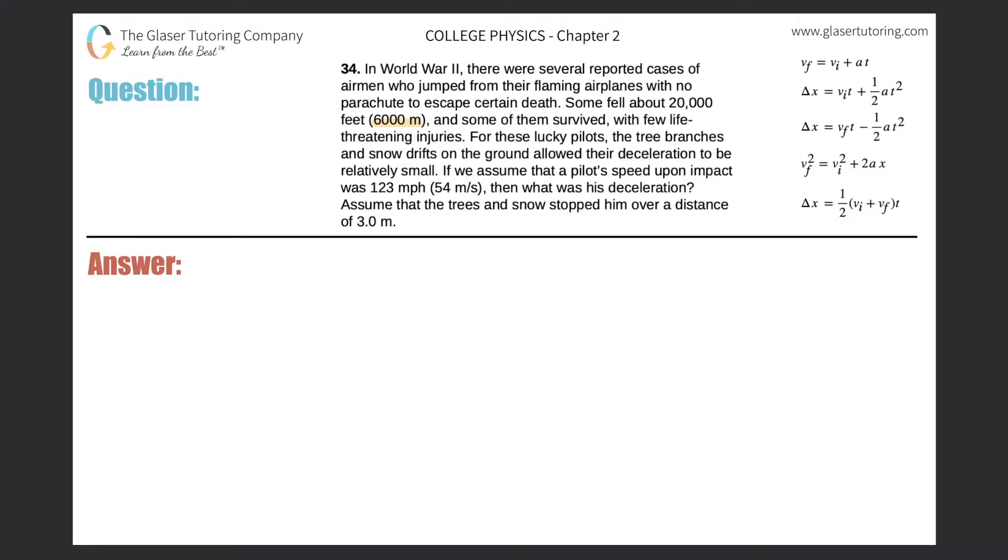For these lucky pilots, the tree branches and snow drifts on the ground allowed their deceleration to be relatively small. If we assume that a pilot's speed upon impact was 103 miles per hour, or 54 meters per second, then what was his deceleration? Assume that the trees and the snow stopped him over a distance of 3 meters.